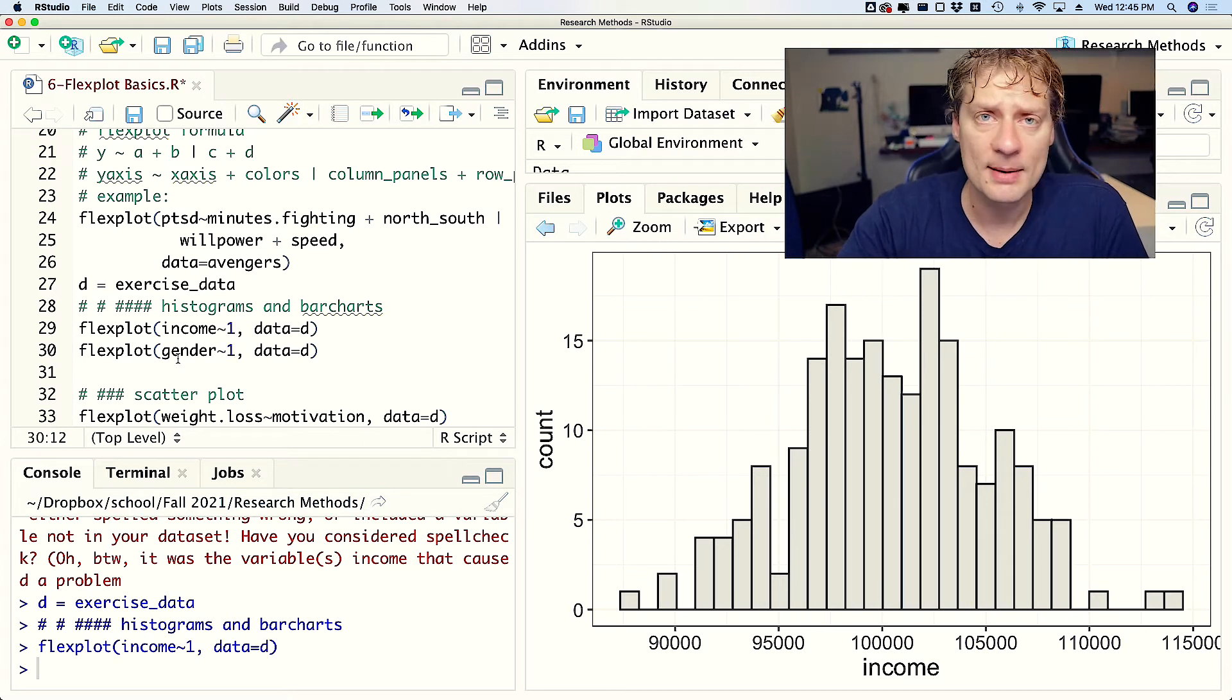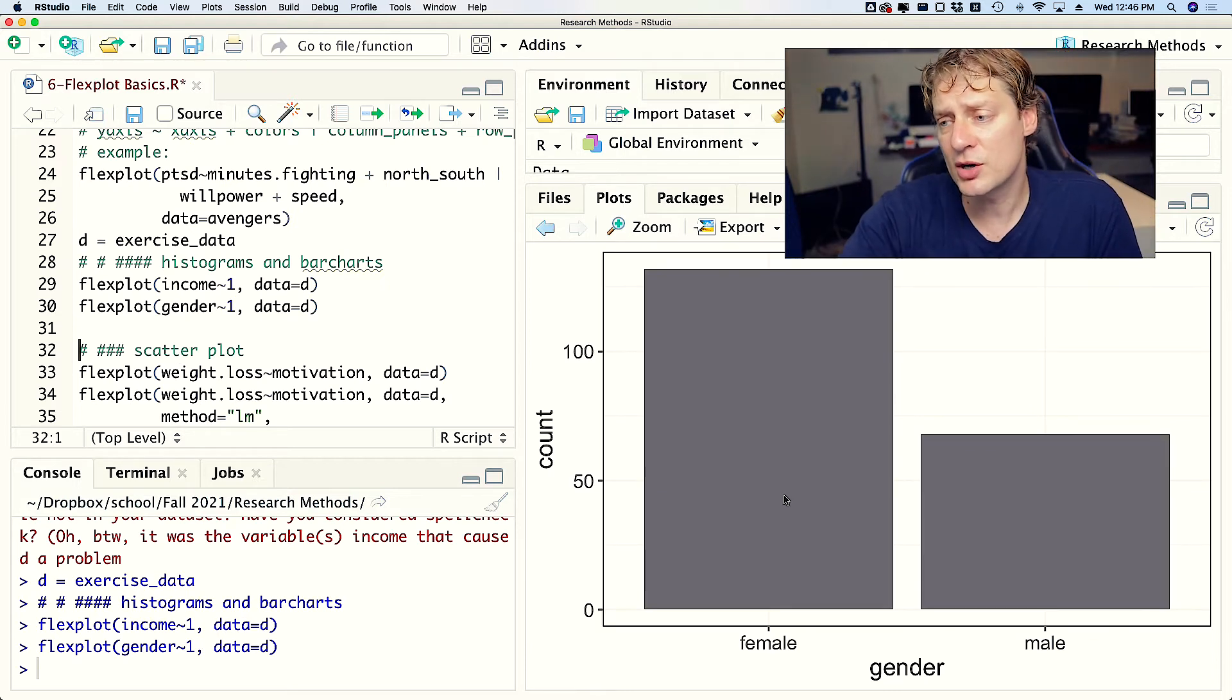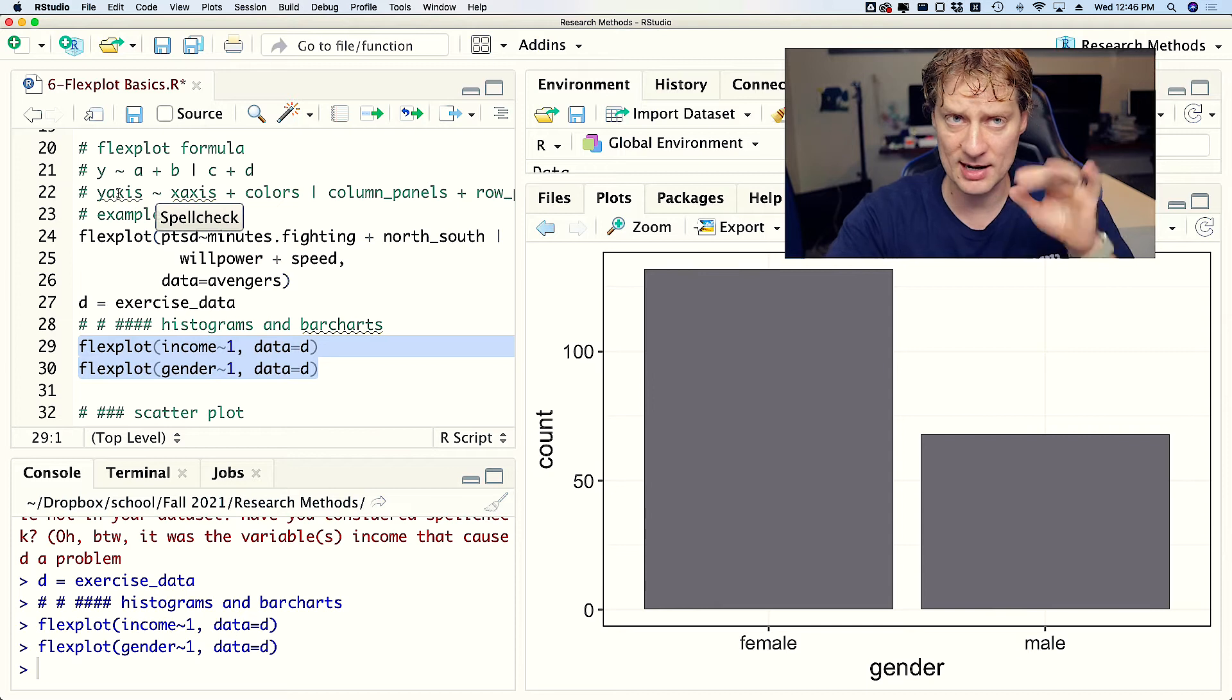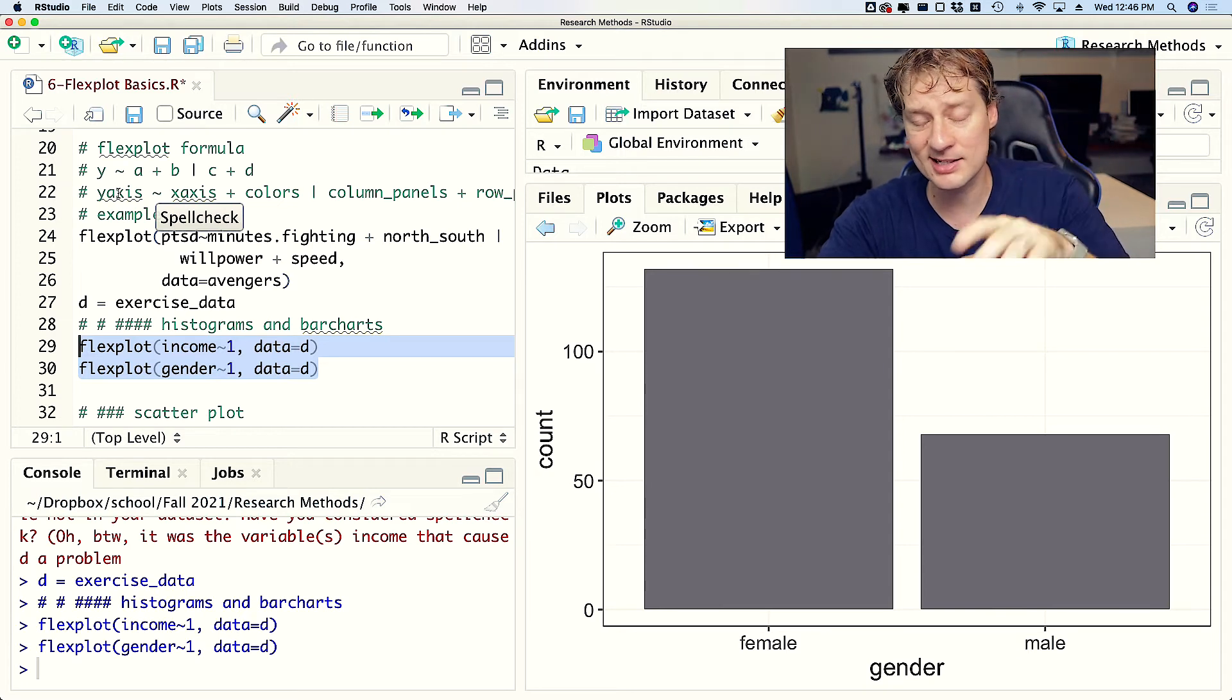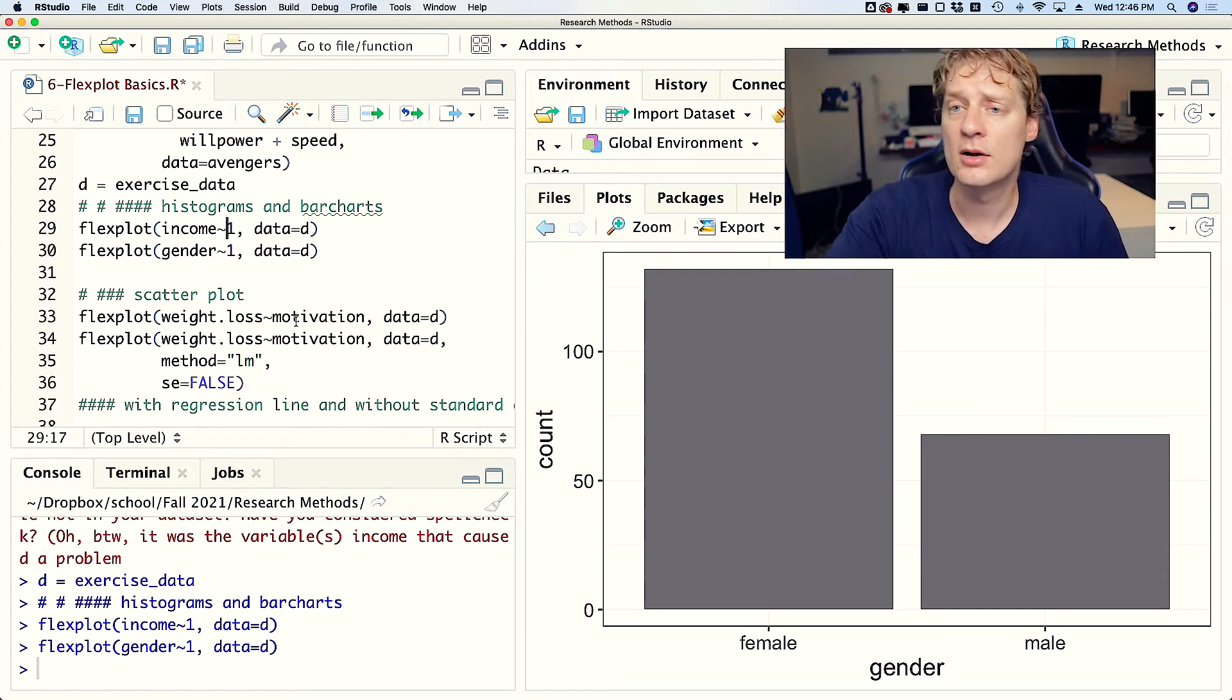Now what happens when we try to visualize a categorical variable? So gender is a categorical variable here, and if I type that in, it gives me a bar chart with females and males, and the y-axis now is count. So those would be the only deviations from what Flexplot does by always putting that first variable on the y-axis unless you have that one, unless you're looking at a histogram or a bar chart.